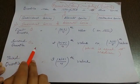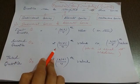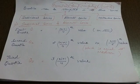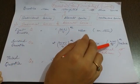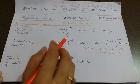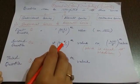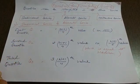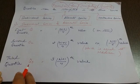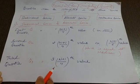For the second quartile Q2, the formula is the 2(N+1)/4th value. If you remember, we used the formula N+1 by 2 for the median. That is why the second quartile is equivalent to the median. For Q3, the third quartile, we use the 3(N+1)/4th value.